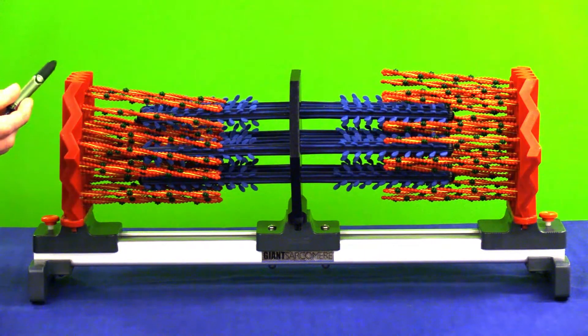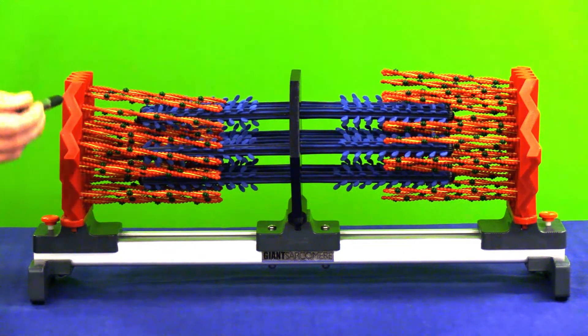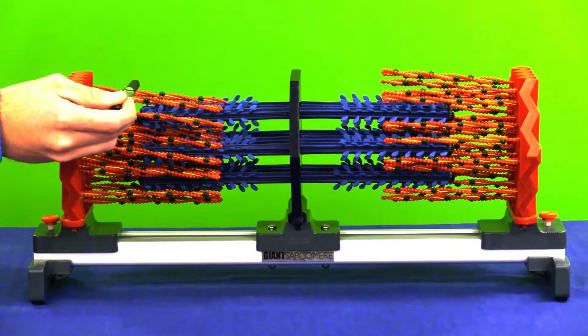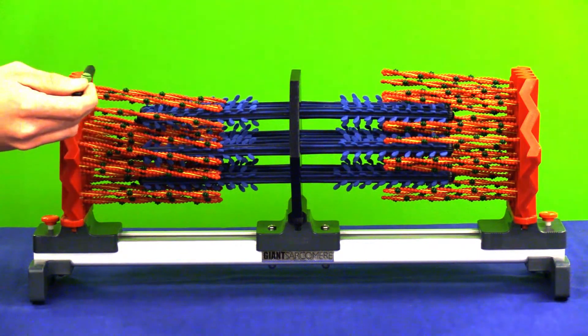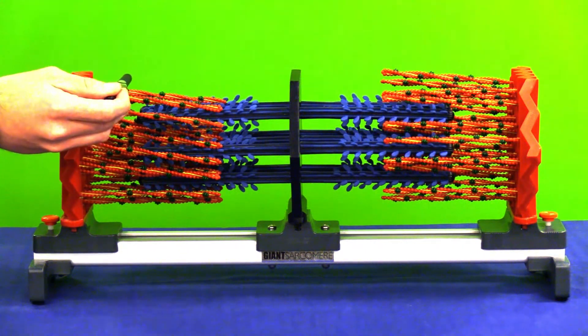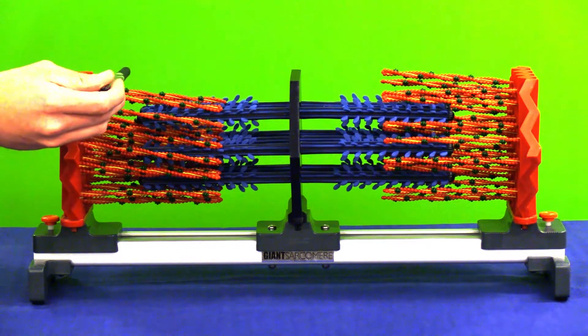When a sarcomere is at rest under a microscope, there are a few distinct bands that appear. As we move in from the Z-line, this region that encompasses just actin filaments is the I-band.